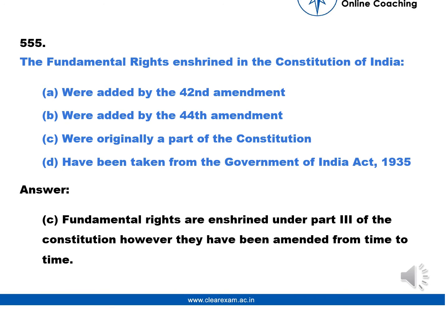Question No. 555: The fundamental rights enshrined in the Constitution of India — option A were added by the 42nd Amendment, option B were added in the 44th Amendment, option C were originally a part of the Constitution, or option D have been taken from the Government of India Act 1935.